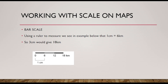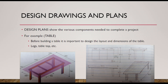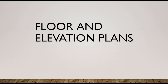Lastly, we have design drawings and plans. Design plans show the various components needed to complete a project. Here we can see all the different components such as the leg and the tabletop, along with all the different measurements. Using a table as our example, before building it, it's obviously important to design the layout and dimensions of the table — the legs, the tabletop, the frame — all the various components needed to complete the project. That's it for floor and elevation plans, scale, and design dimensions.